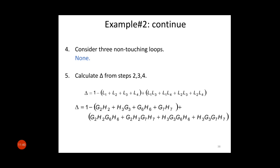Del equals 1 minus the sum of all individual loop gains plus the sum of the gain products of all possible combinations of two non-touching loops. Since there are no three non-touching loops, we stop here. So del = 1 minus (L1 + L2 + L3 + L4) plus (L1*L3 + L1*L4 + L2*L3 + L2*L4). After substituting the values of L1, L2, L3, L4, we find del.